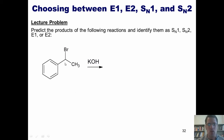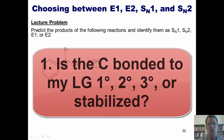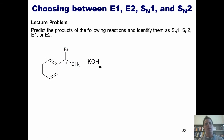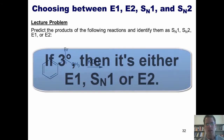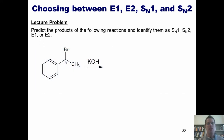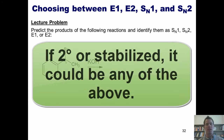First, we look at our starting material and determine if the carbon stuck to our leaving group — in this case a bromine — is primary, secondary, tertiary, or stabilized. If it's primary, the only reaction it can proceed through is either E2 or SN2. If it's tertiary, it could potentially proceed through E1, SN1, or E2. If it's secondary or stabilized, it could potentially be any of the above.